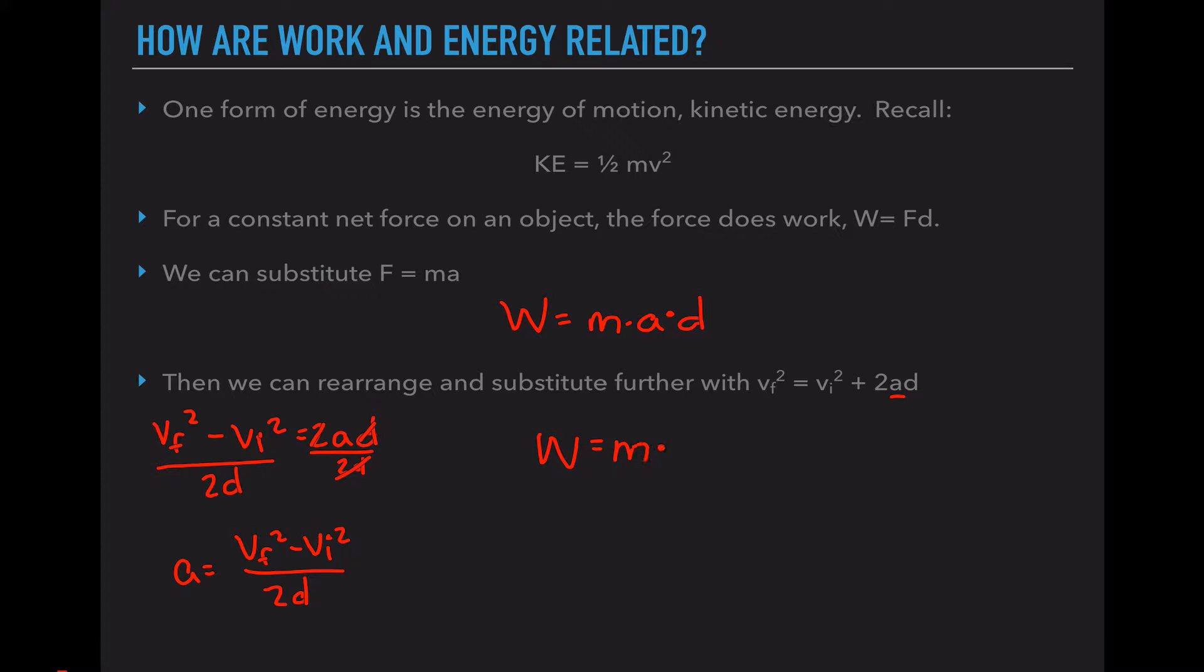So work equals mass times acceleration times distance. We are now going to do mass times vf² minus vi² over 2d times distance. Now we can cancel out the two distances because one's on the bottom of a fraction and one's on the top. Our next step, I'm going to distribute this m into the parentheses.